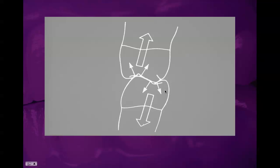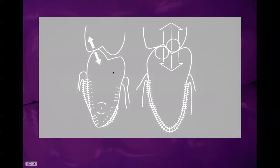Here we see the distribution of forces. In a cusp-fossa relationship, uneven force distribution causes a rotation or tilt of the tooth in the alveolar socket. Even or well-distributed forces distribute the load evenly along the facial, lingual, and apical surfaces of the tooth.